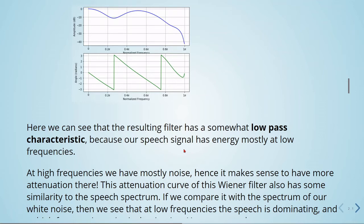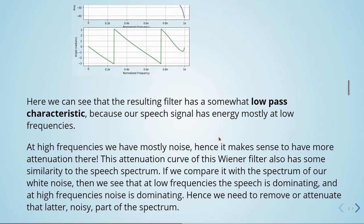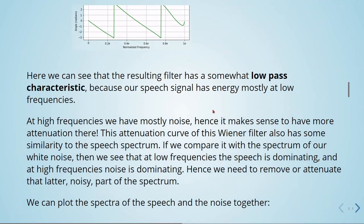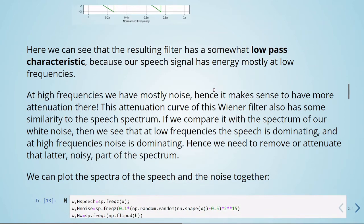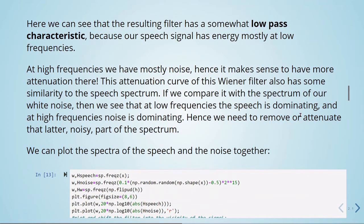This attenuation curve of this Wiener filter also has some similarity to the speech spectrum. If we compare it with the spectrum of white noise, then we see that at low frequencies the speech is dominating, and at high frequencies noise is dominating. Hence we need to remove or attenuate that later, this noisy part of the spectrum.